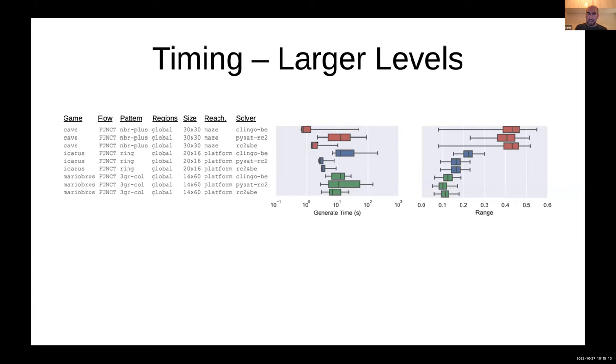Looking at larger levels generated by just those two, I also created a portfolio solver that runs both of them in parallel and whichever one finishes first takes the answer from that. Here we can see that the portfolio solver is roughly comparable to the better one, although there's a little bit of overhead to coordinate them. In some games Clingo seemed to be faster and some games RC2 seemed to be faster, but the portfolio solver gets the best of both.